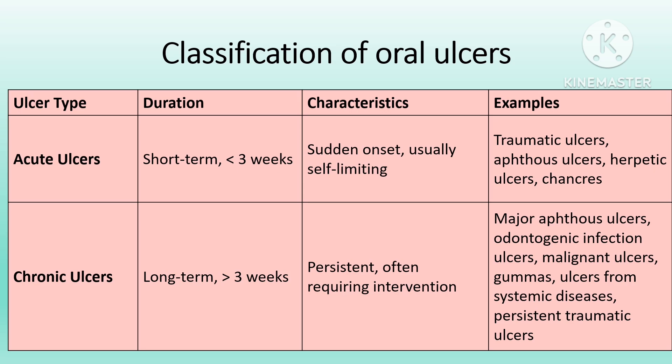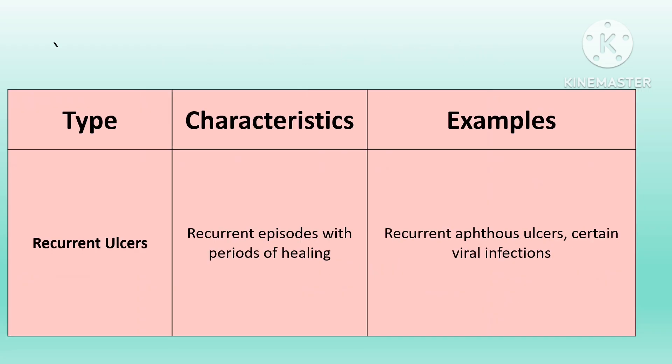Acute ulcers have a duration of less than three weeks; if lasting more than three weeks, they are classified as chronic ulcers. Apart from acute and chronic, there is a third category: recurrent ulcers, which have recurrent episodes with periods of healing in between. Examples include recurrent aphthous ulcers, and certain viral infections can also cause recurrent ulcers in the oral cavity.